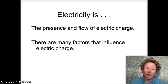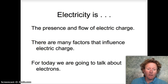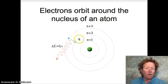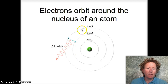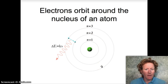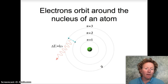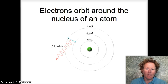There are many factors that influence electric charge, but for today we're going to talk about electrons. Electrons orbit around the nucleus of an atom. There are protons and neutrons in the middle, in the nucleus, and the electrons have different levels that they circulate in around the atom. This is a Bohr atom, which is an older model of the atom — you'll talk more about that in second semester.